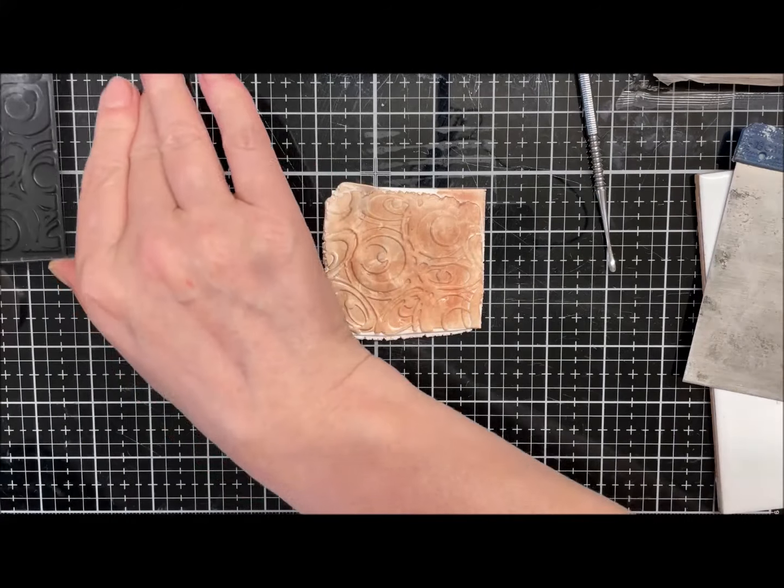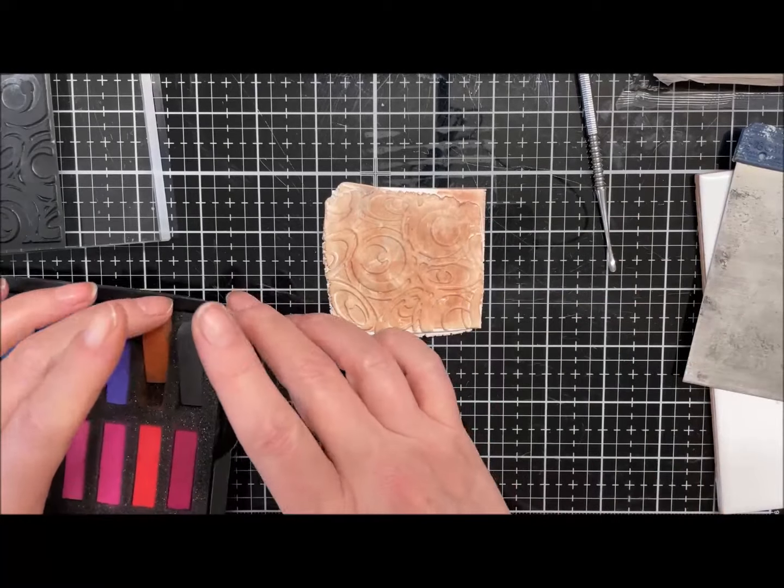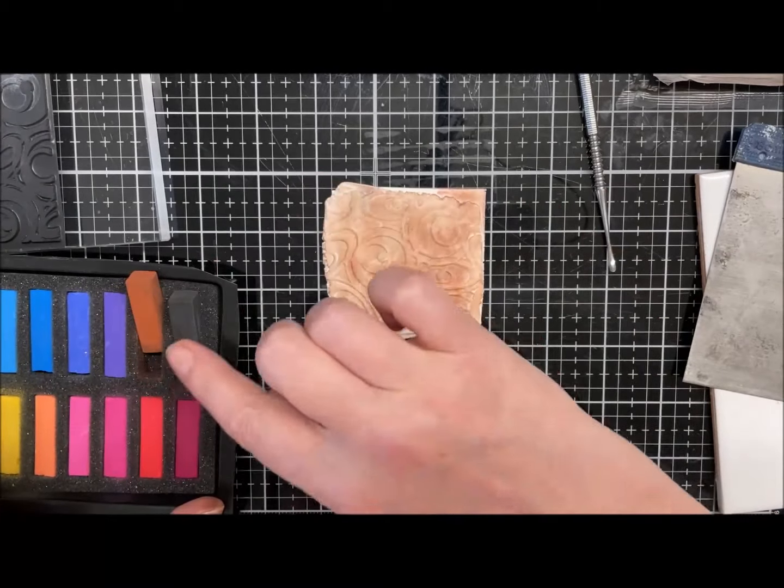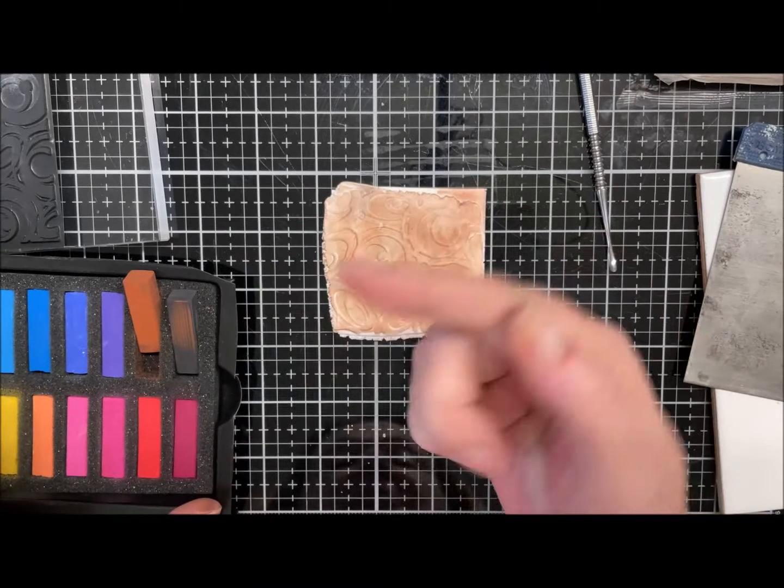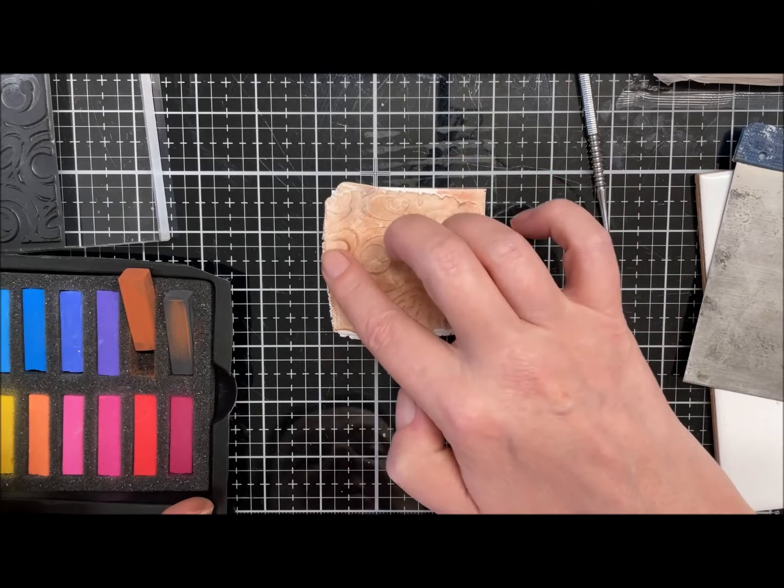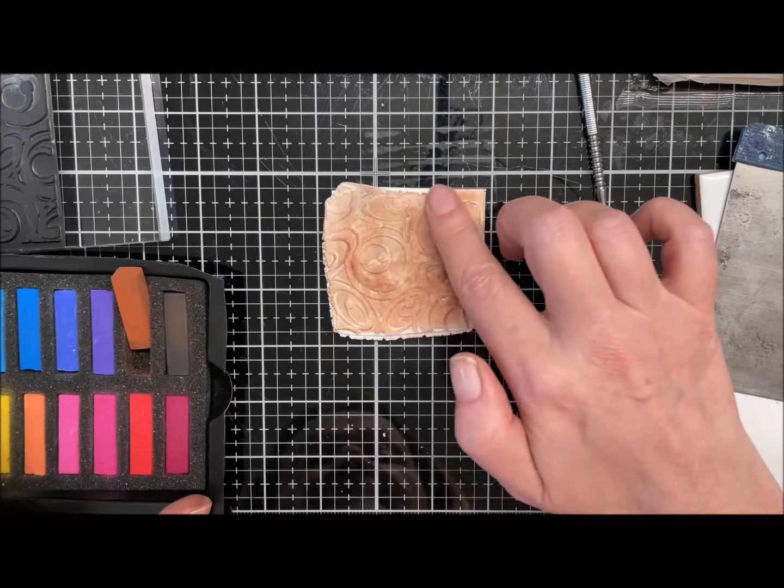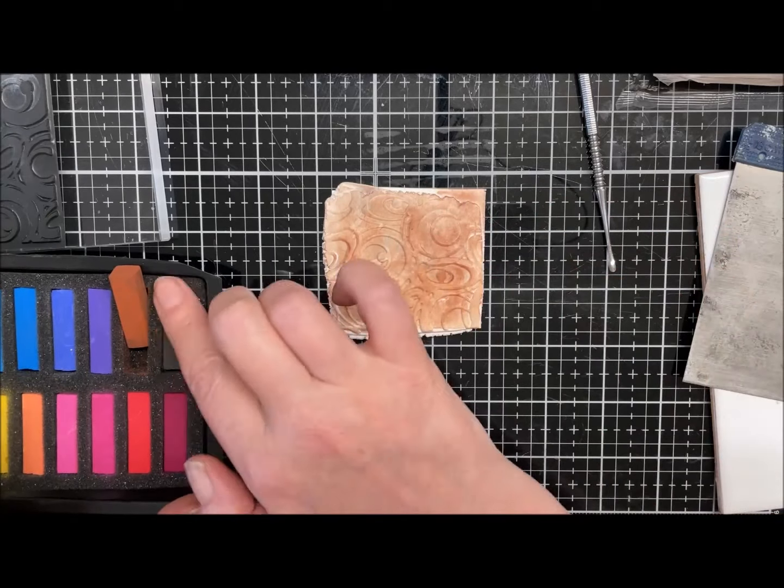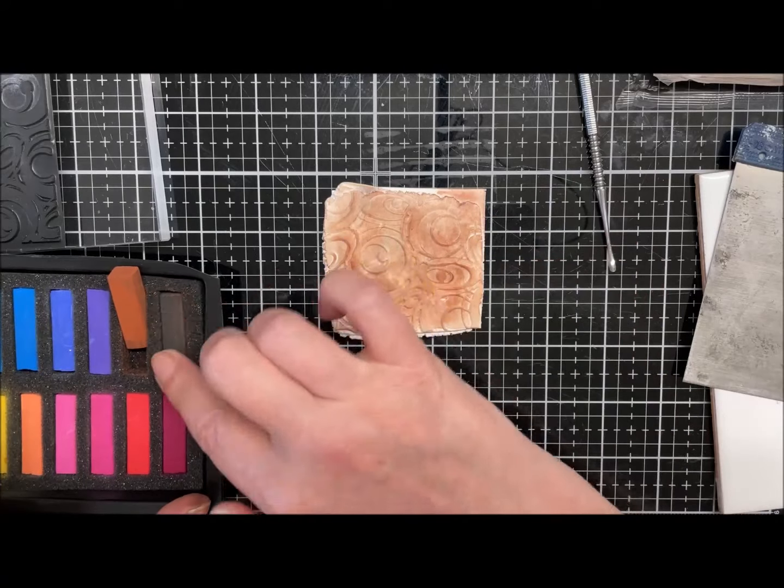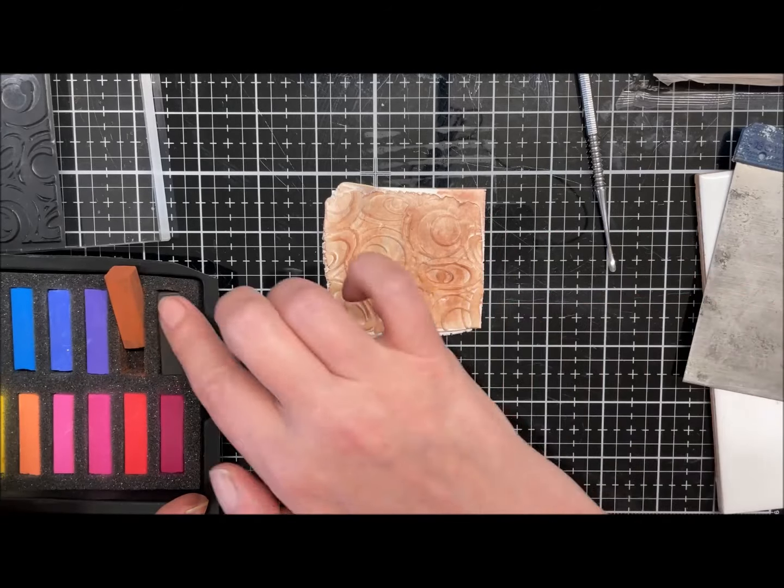Now I'm just going to put a little bit of relief, a little bit of distressing on the relief. So I'm just going to rub my finger on my black and my brown to get a bit of a dark brown, and I'm just going to go over the surface gently just to give those edges a bit more of a distressed edge.